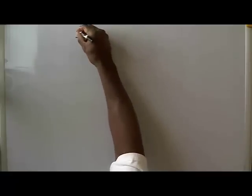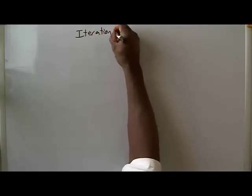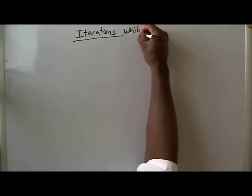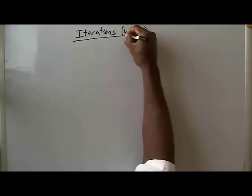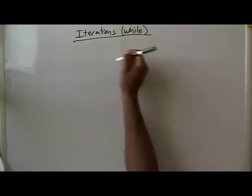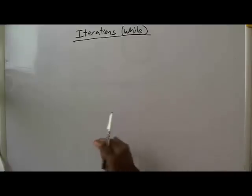Continuing our discussion of iterations implemented using the while loop, we're going to go over some examples. I'm going to use the same examples that I used when I introduced the for loop. I'm going to illustrate the use of the for loop and the while loop side by side.